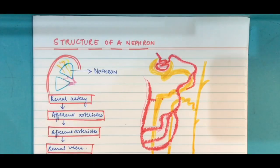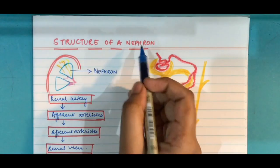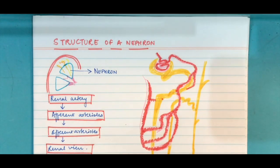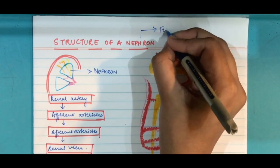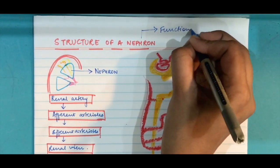That is the structure of a nephron. Let's begin with what is a nephron. You know what a cell is - cell is the structural and functional unit of any organism. Similarly, nephron is the functional unit of a kidney.